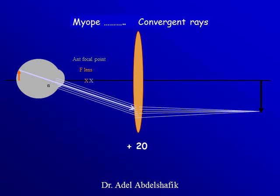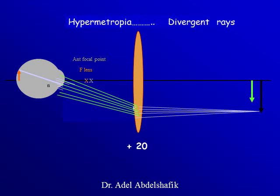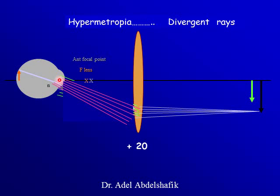If it were a myopic eye, rays would come out convergent. In case of hypermetropia, rays come out divergent. In case of a myopic eye, if the focal point of the lens is inside the anterior focal point, the image formed will be smaller than average. And in case of hypermetropia, if rays are coming divergent and the focal point of the lens is inside the anterior focal point distance, then the image formed will be larger.